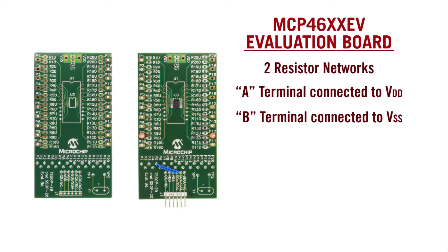The MCP46XXX has two resistor networks with the device resistor network zero configured in a potentiometer mode with the A terminal connected to VDD and the B terminal connected to VSS. The device resistor network one can be evaluated for rheostat operation.